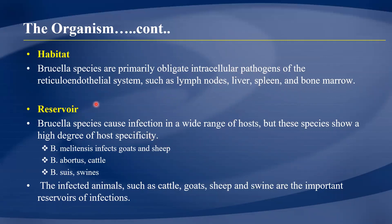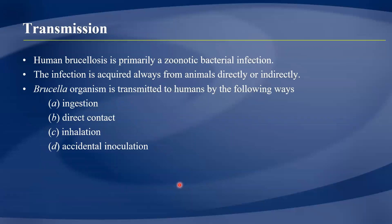The reservoir depends on which species we are talking about, as different species have specificity for different reservoirs. For example, Brucella melitensis affects goats and sheep; Brucella abortus favors cattle; Brucella suis favors swine; and Brucella canis is mostly found in dogs. These infected animals provide the brucella that ultimately affects humans.